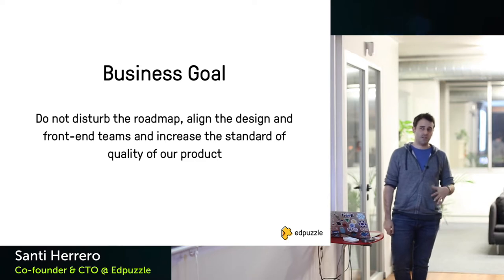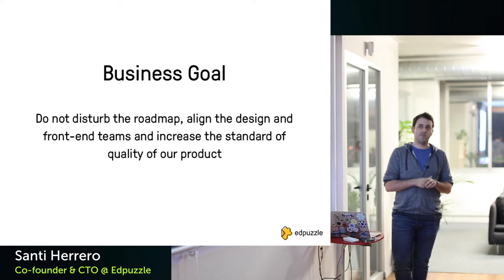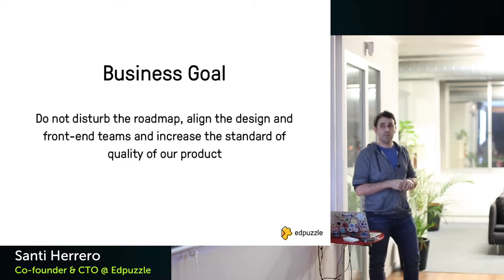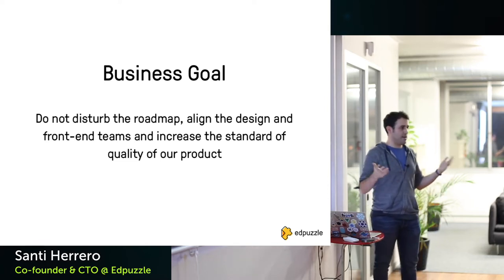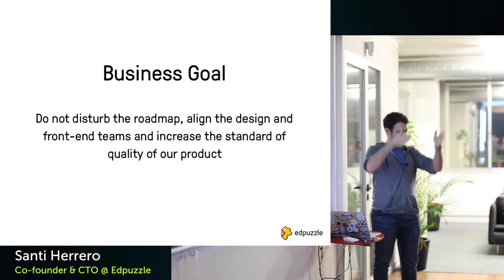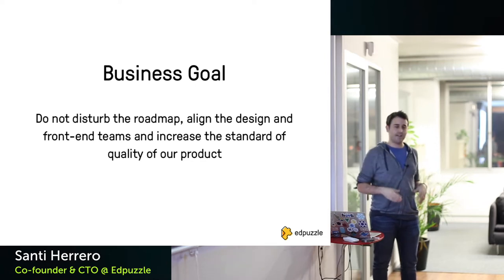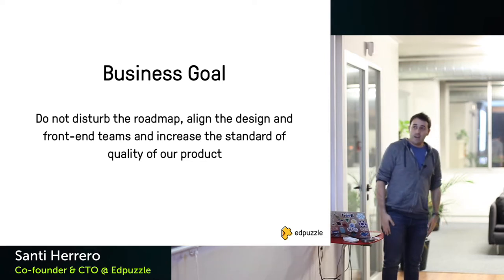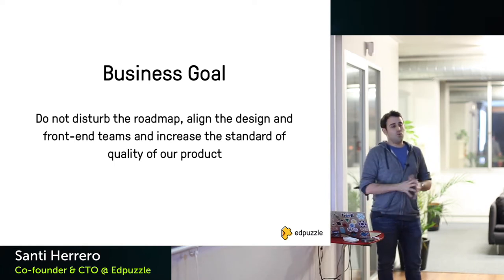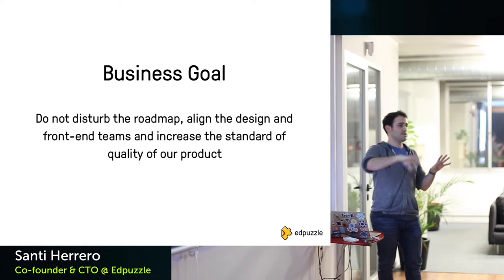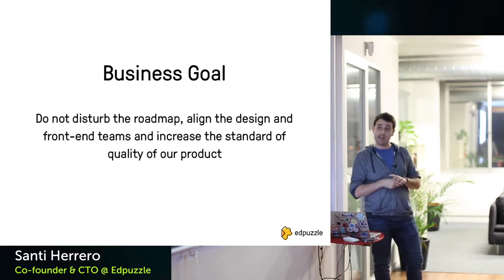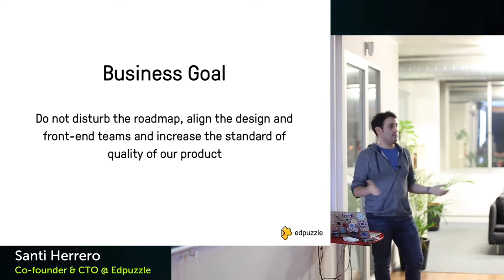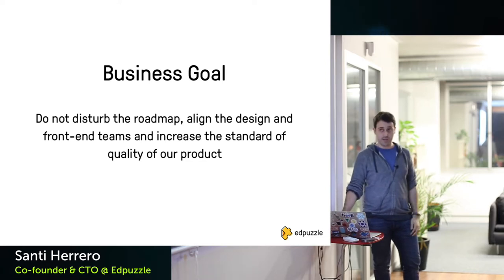First, the business goal: we don't want to disturb the roadmap. It's quite full — we have a lot of features to implement, and legal requirements like GDPR coming in May that can't be moved. The other business goal is how we can improve overall team communication with this change — for example, aligning the design team and the front-end team — and as a result increase the quality of our product.